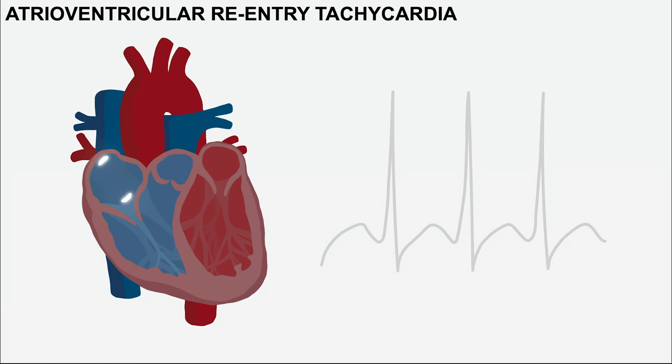The other form of SVT is atrioventricular re-entry tachycardia, also referred to as AVRT. It happens in the context of an accessory pathway. The heart has a fibrous band between the atria and ventricles, which prevents depolarization from leaking from the atria into the ventricles and ensures the impulse travels via the AV node. In patients with an accessory pathway, depolarization goes across the atria, stops at the AV node, then moves down the bundle of His and Purkinje fibers before jumping back into the atria via the accessory pathway, forming a large circuit that continues to cycle between the atria and the ventricles.